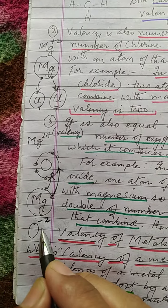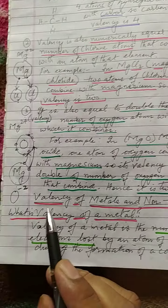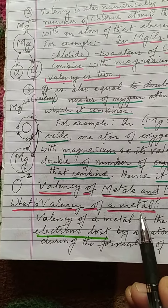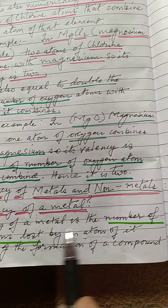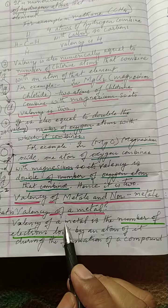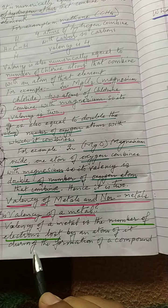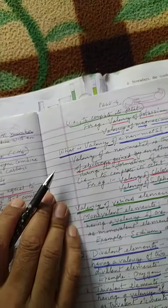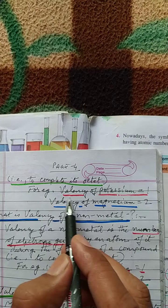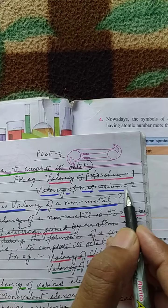Now, valency of metals and non-metals. The valency of a metal is the number of electrons lost by an atom of it during the formation of a compound — that is, to complete its octet. For example, the valency of potassium is one and the valency of magnesium is two.